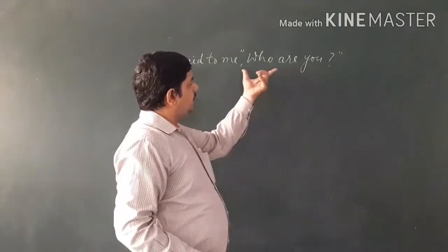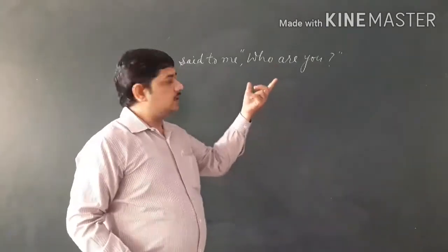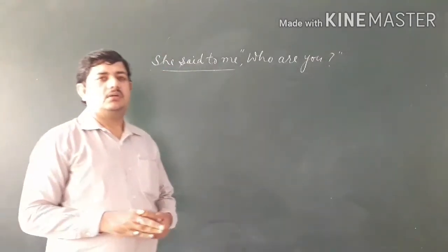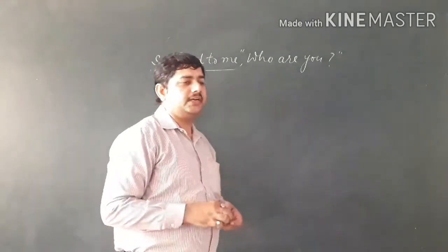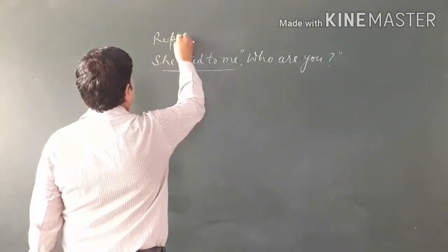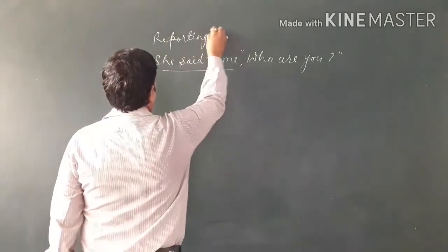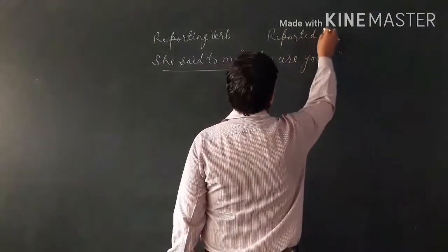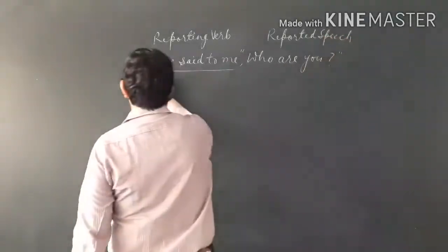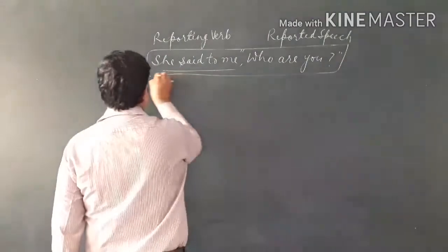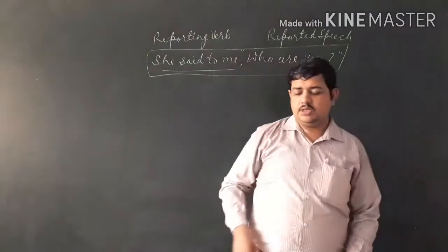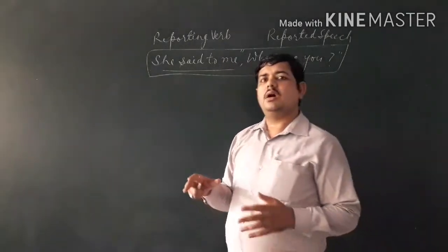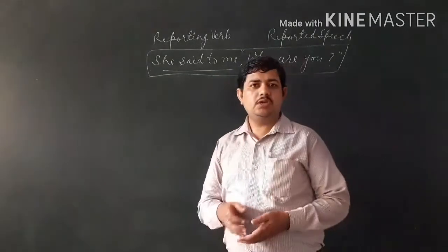You were given information about these two parts: the part which is not in inverted commas is called the reporting clause, and the part which is in inverted commas is called reported speech. Together, the whole thing is called direct speech. In this topic you will be told how we convert direct speech into indirect speech.